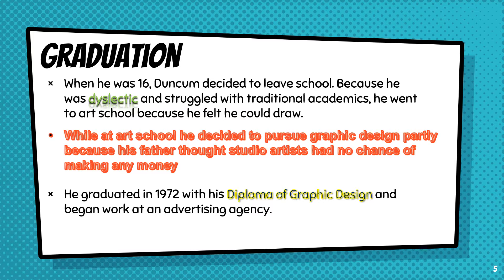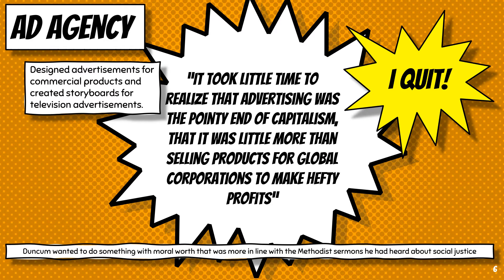While at art school, he decided to pursue graphic design, partly because his father thought studio artists had no chance of making any money. He graduated in 1972 with his diploma of graphic design and began work at an advertising agency, where he designed advertisements for commercial products and created storyboards for television advertisements. After 18 months, Duncan quit. Working in a morally empty industry did not sit well with him. He commented: "It took little time to realize that advertising was the pointy end of capitalism, that it was little more than selling products for global corporations to make hefty profits." Duncan wanted to do something with moral worth more in line with the Methodist sermons he had heard about social justice. He was also a teen during the Vietnam War and was resisting the draft, and his social and moral compass was starting to guide his life.